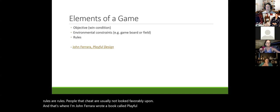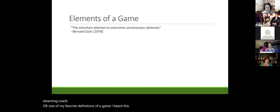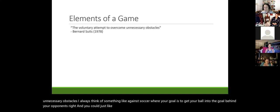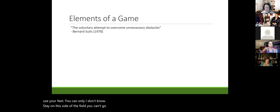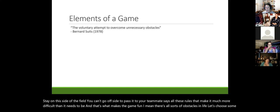In games, we agree that rules are rules; people who cheat are not looked upon favorably. That's from John Ferrara, who wrote 'Playful Design.' One of my favorite definitions of a game: 'a voluntary attempt to overcome unnecessary obstacles.' Think of soccer — your goal is to get the ball into the net behind your opponent, but you can only use your feet, you can't go offside — all these rules make it much more difficult than it needs to be, and that's what makes it a game.